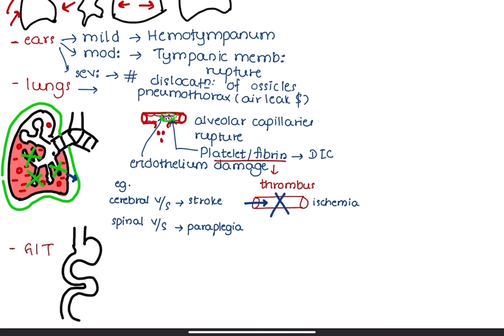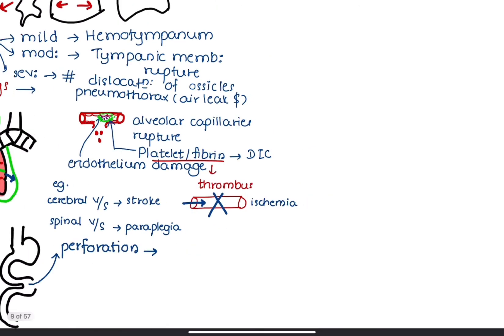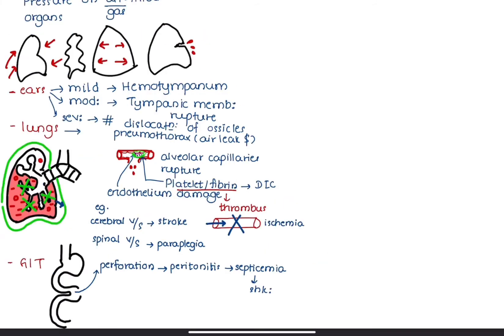Impact of blast wave on gas-filled gastrointestinal tract results in intestinal perforation and leakage of intestinal contents into the peritoneum, causing peritonitis, septicemia, and septic shock. Pressure-related injuries to the ear are known as acoustic barotrauma, injuries to the lungs are known as pulmonary barotrauma, and injuries to the GI tract are known as intestinal barotrauma.